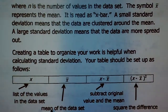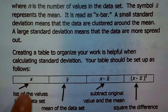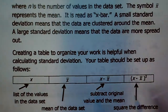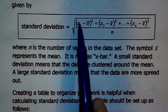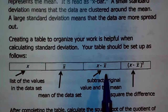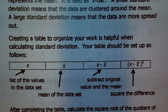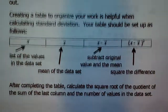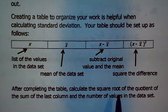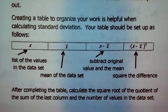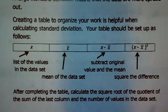I always created a table to organize my work when calculating standard deviation. We'll make a list of all the values in the data set, then list the mean. Our formula says to subtract the data value and the mean and then square it. So the table will have a column for the result of the subtraction and another column where you square the difference. After that, calculate the square root of the quotient of the sum of the last column divided by the number of values.